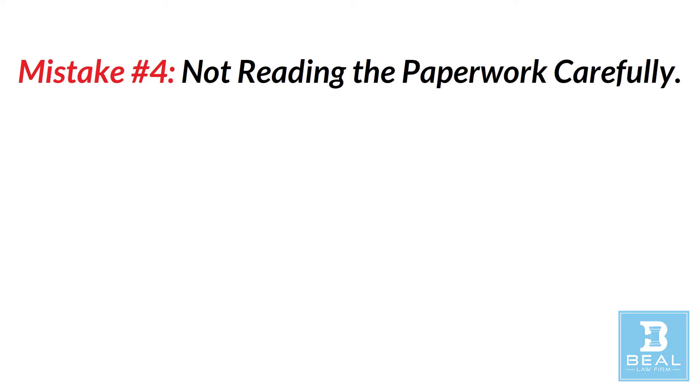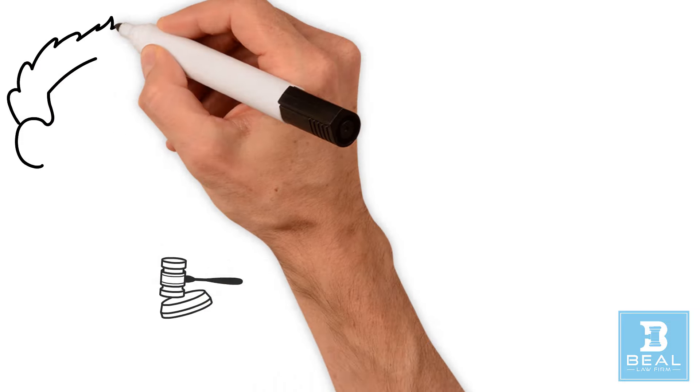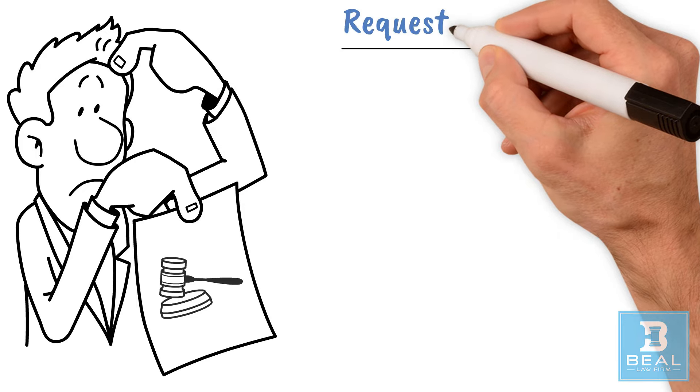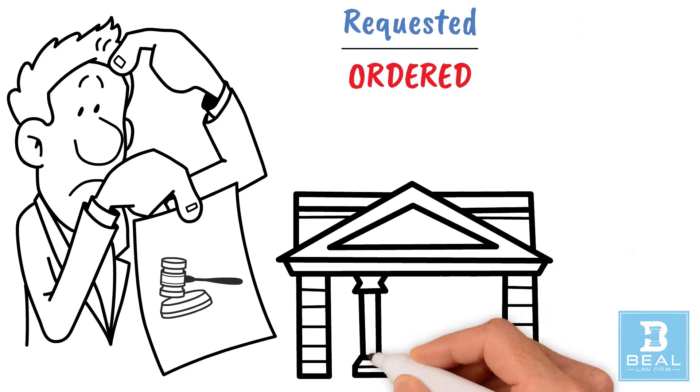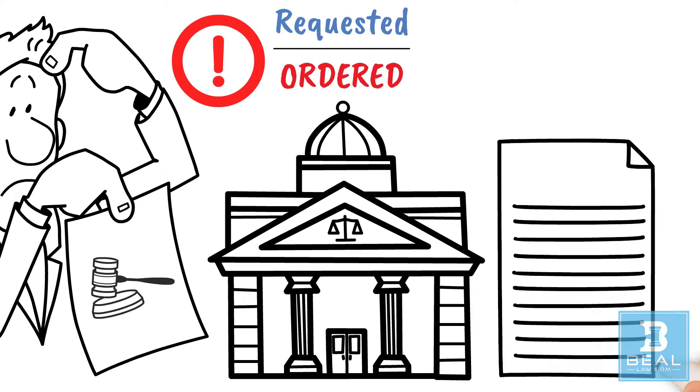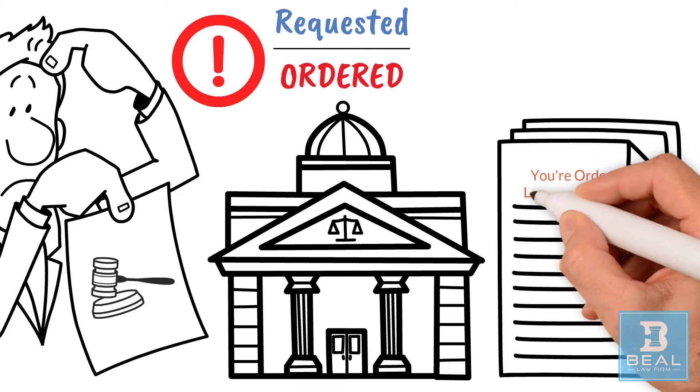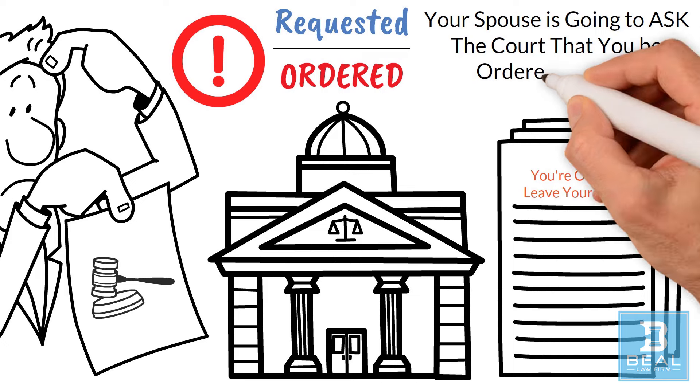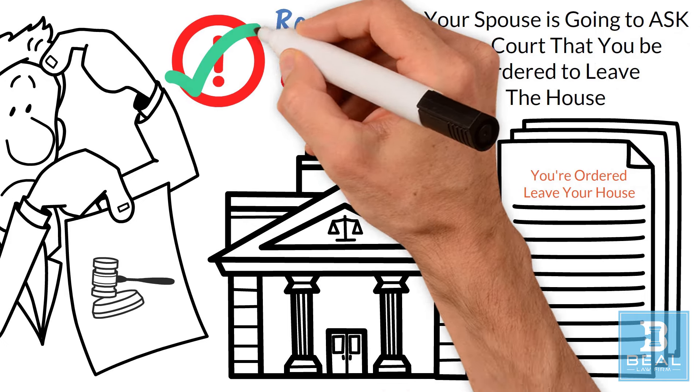Mistake number four – Not Reading The Paperwork Carefully. The legal documents involved in a divorce can be confusing. It's crucial to distinguish between what's requested and what's ordered by the court. The difference can be critical. Do the papers that you've been served with order you to leave your house? Or simply state that your spouse is going to ask the court that you be ordered to leave the house? The difference is critical.